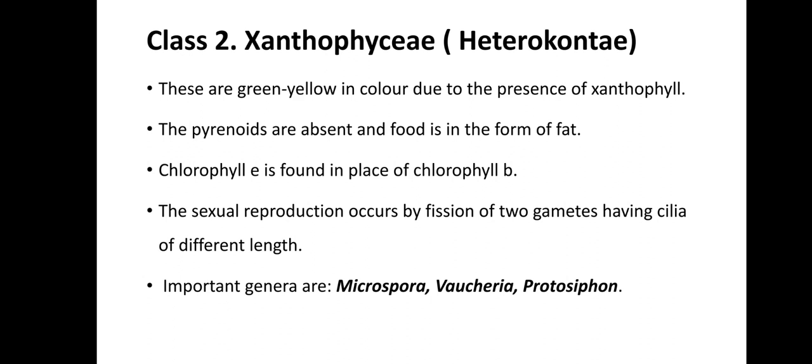Class 2 is Xanthophyceae, or Heteroconti — the yellow-green algae. The yellow-green color is due to the presence of xanthophyll. Pyrenoids are absent and the reserve food material is oil or fat. Chlorophyll E is present instead of chlorophyll B. Sexual reproduction occurs by fusion of two gametes having cilia of different, unequal length. Important species are Microspora, Vaucheria, and Protosiphon.